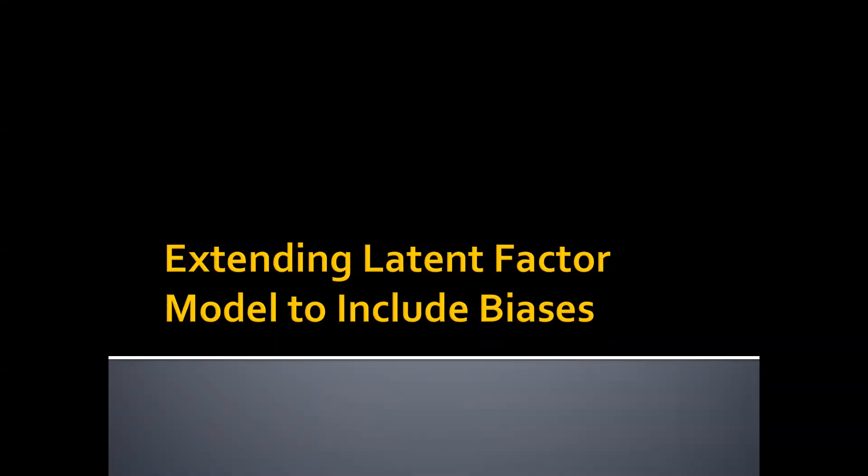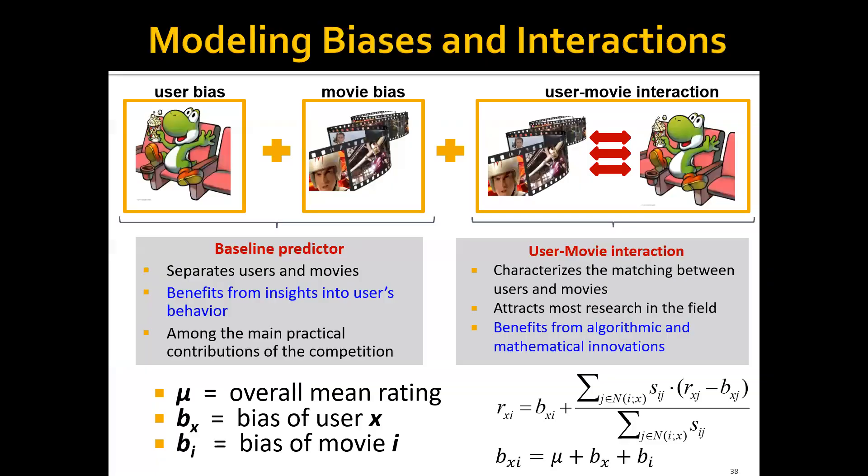Let's talk about how to extend the latent factor model to include user and item biases to further improve accuracy. In the collaborative filtering approach, we have been able to extend this method to include both user bias and movie bias.